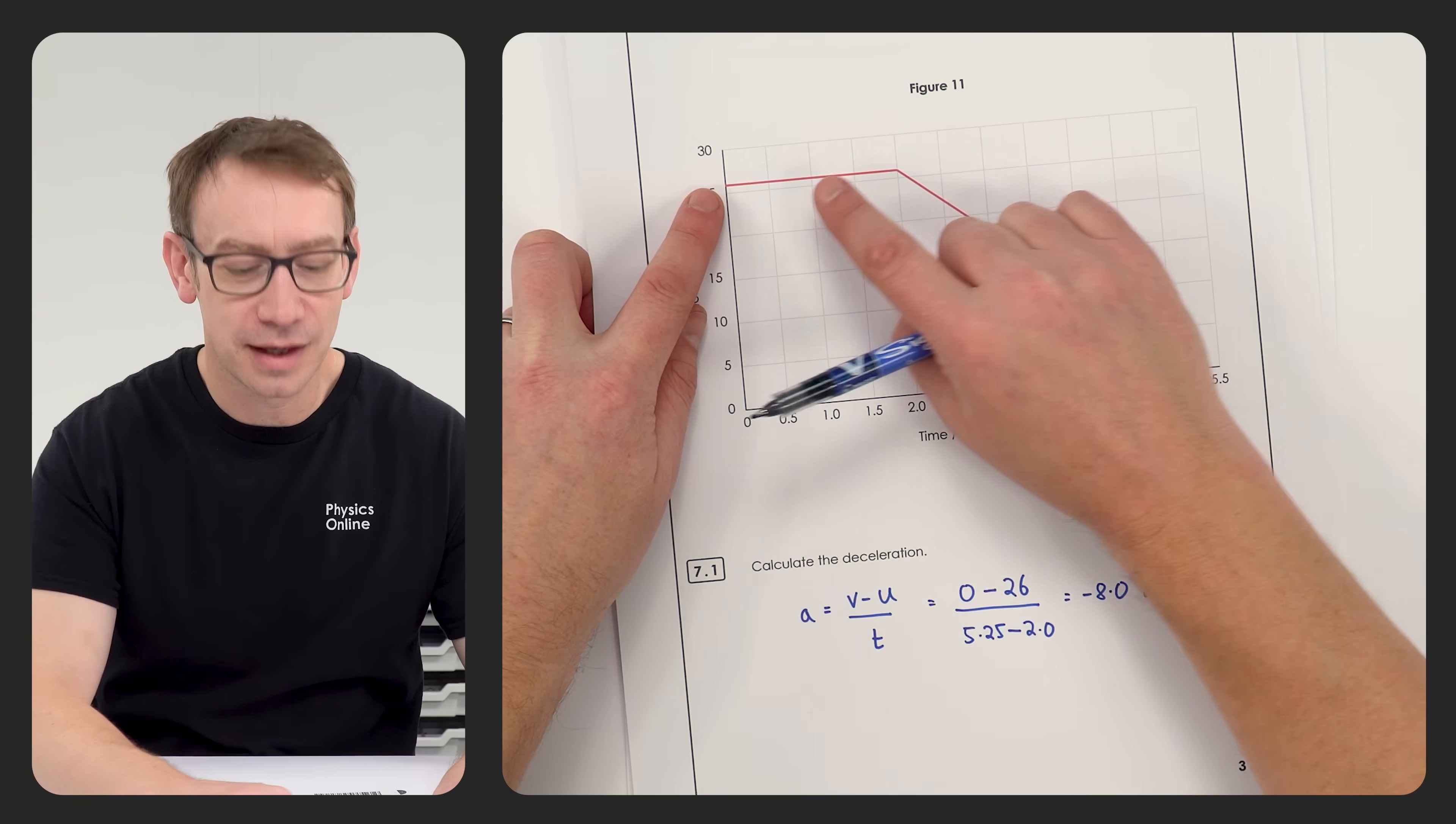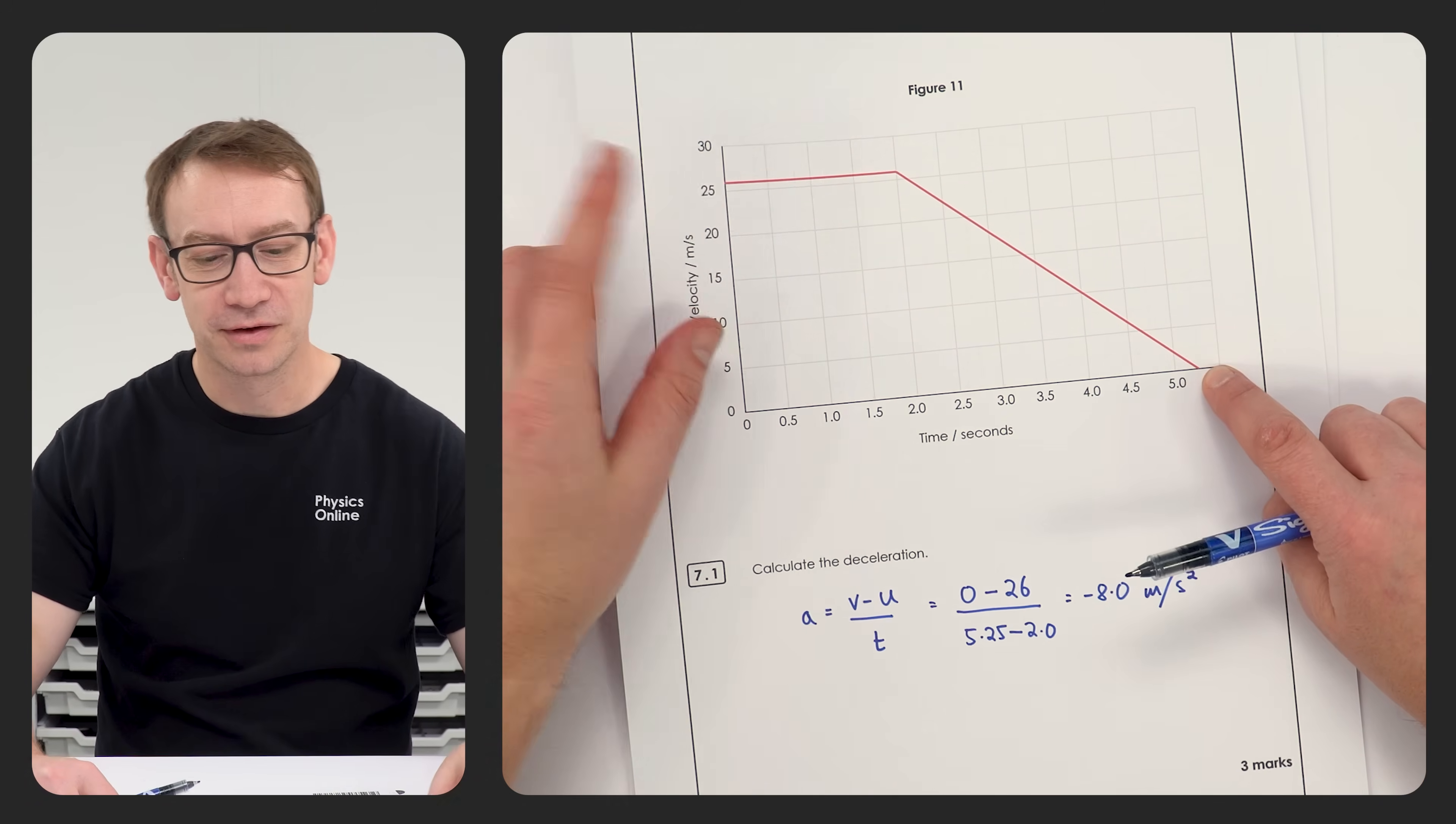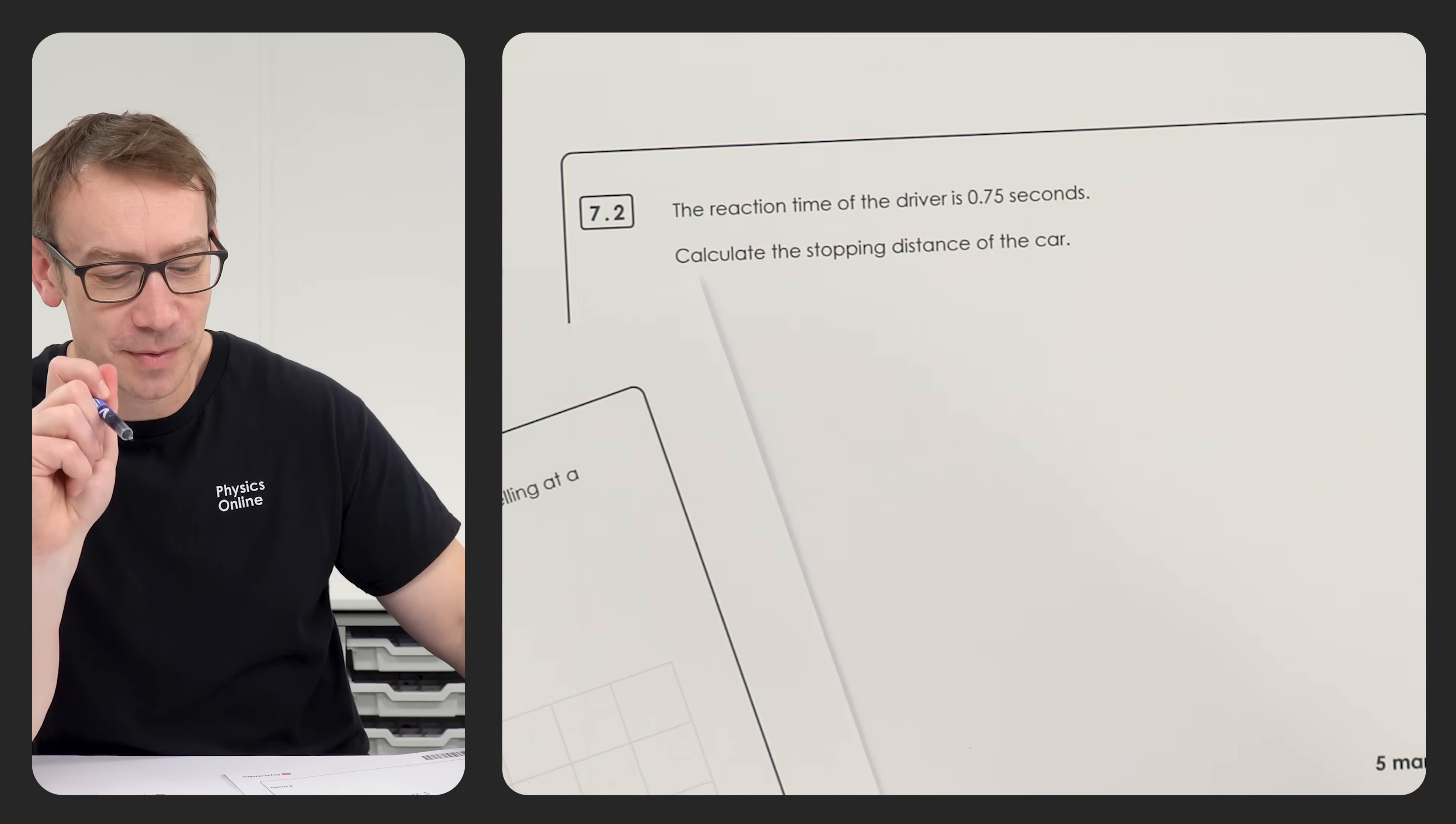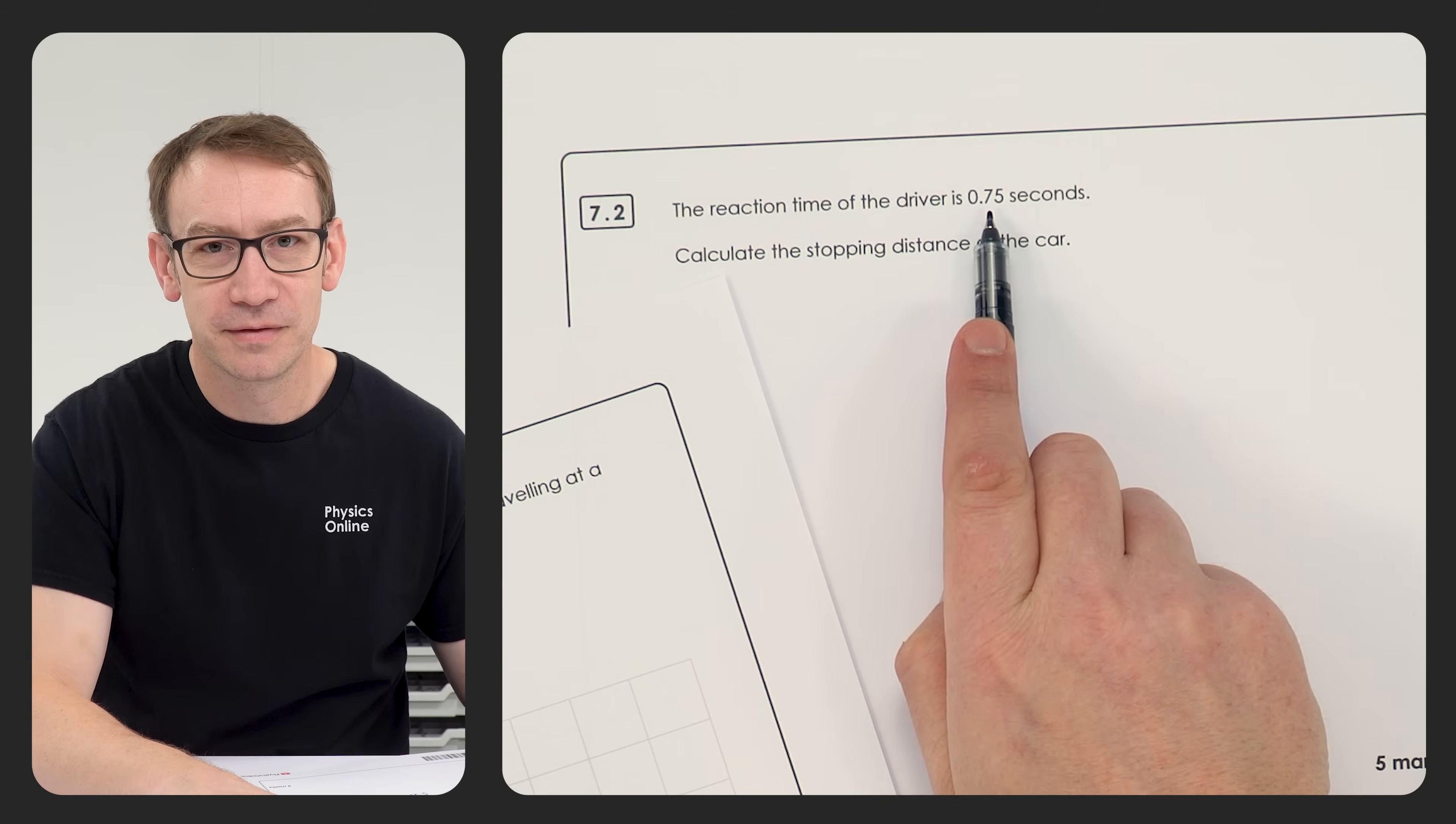And then we've got the brakes being applied and then we have our braking distance. Now the question asks you to calculate the stopping distance of the car, but the key thing that I think lots of people didn't see is that the reaction time of the driver is 0.75 seconds.